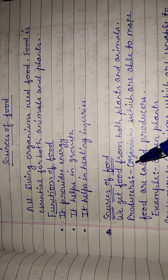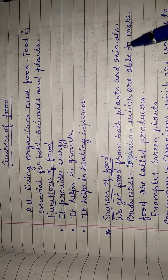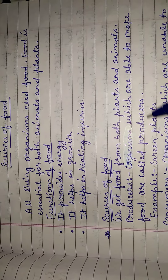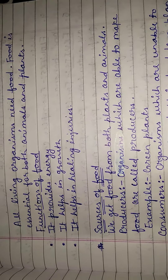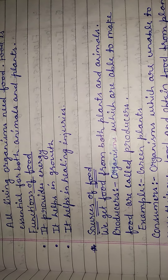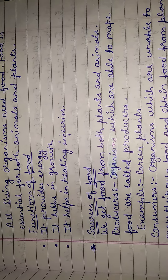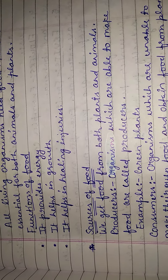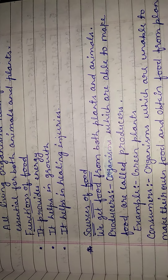What are producers? Producers are the organisms which are able to make their own food. We know that plants can make food by the process of photosynthesis, and only plants can make their own food. That's why we call plants producers.